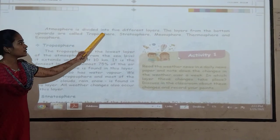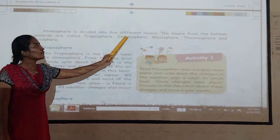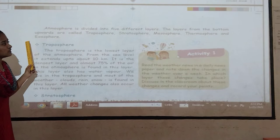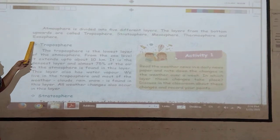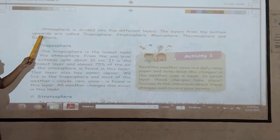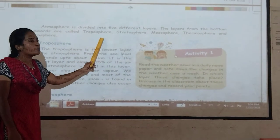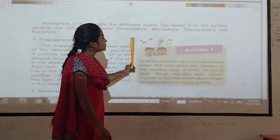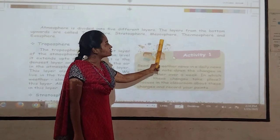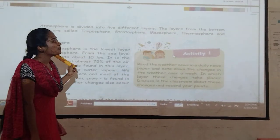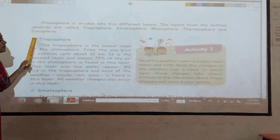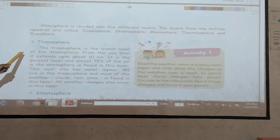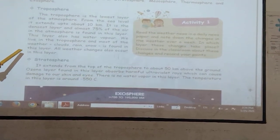It protects the Earth from getting too cold or too hot. The atmosphere is divided into 5 different layers. The layers from the bottom upwards are called Troposphere, Stratosphere, Mesosphere, Thermosphere and Exosphere.